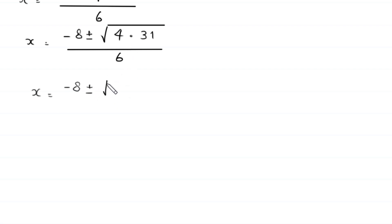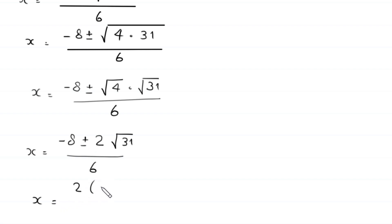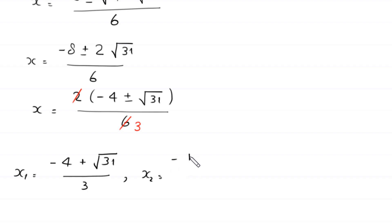Simplifying, the square root of 124 becomes 2 times root 31. So x equals negative 8 plus or minus 2 root 31, divided by 6. Factoring out 2 from the numerator gives (negative 4 plus or minus root 31) divided by 3. Therefore x₁ equals (negative 4 plus root 31) over 3, and x₂ equals (negative 4 minus root 31) over 3.